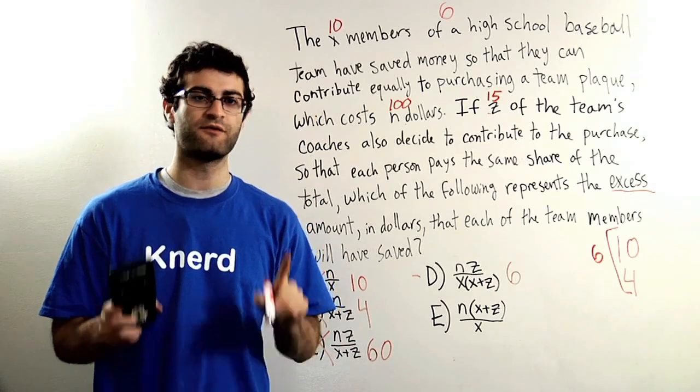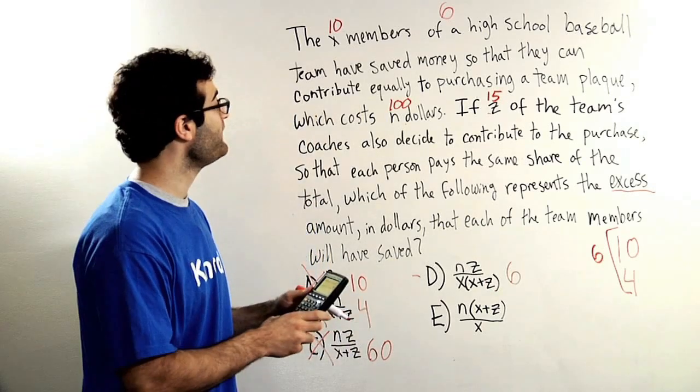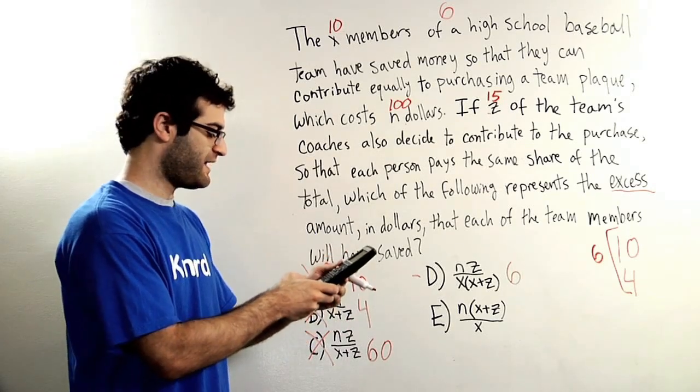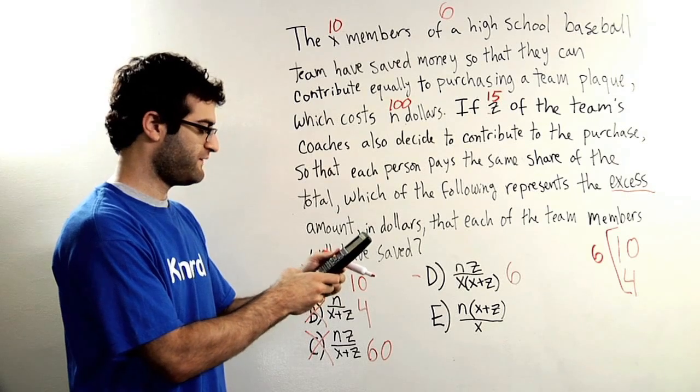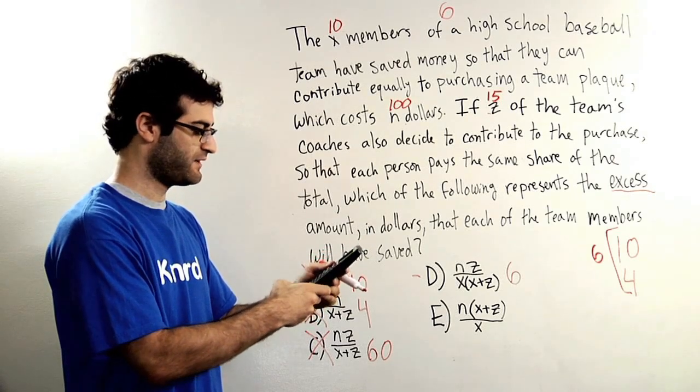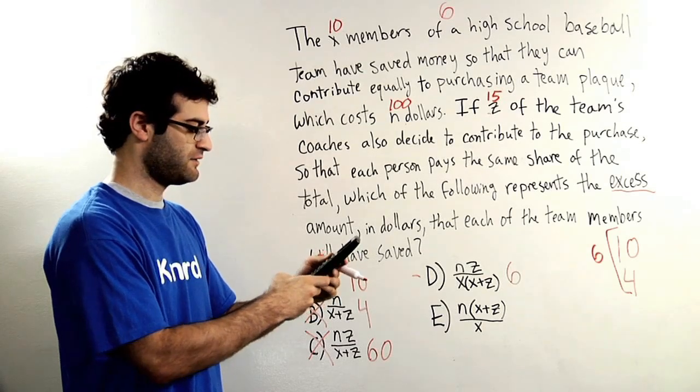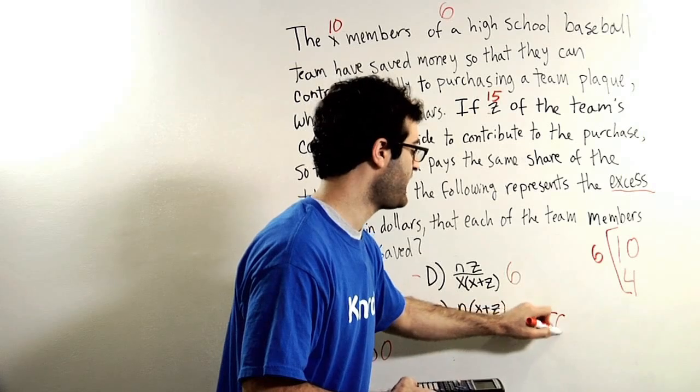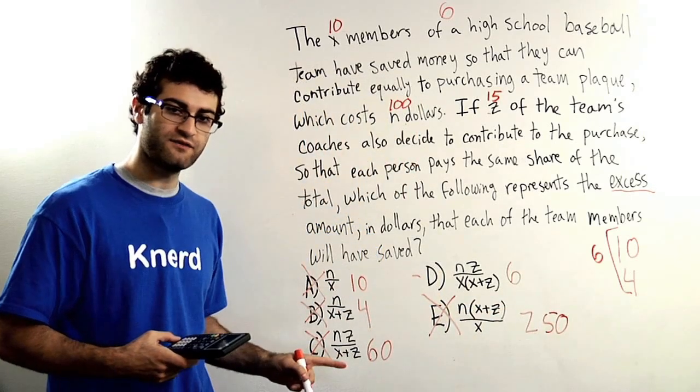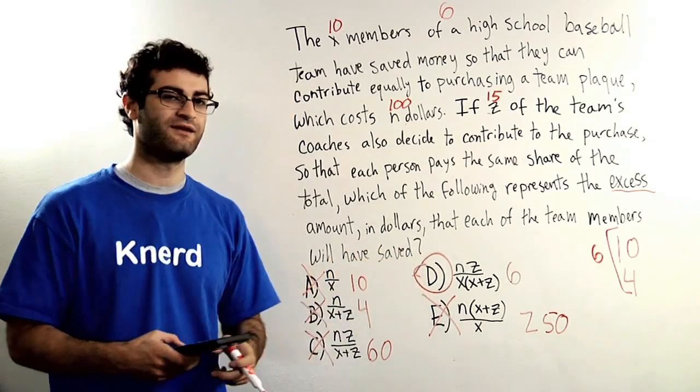But whenever we're looking for goal numbers, we always need to make sure we check all five answer choices. Answer choice E is the final one, let's hope that it's not 6 this time. So that's going to be 100 times parentheses 25, right, or x plus z, which is 2,500 divided by x, which is 10, and I get 250, which is of course not our goal number, goodbye answer choice E. Only one of my five answers yielded my goal number when I plugged in, and the correct answer is in fact D.